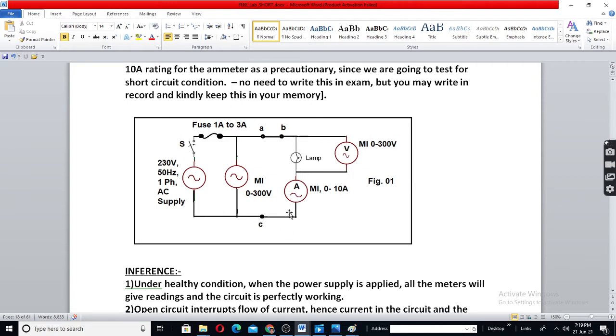Ammeter is in series with both supply and load. Voltmeter is across supply as well as across lamp. There is switch and also a fuse. Better put only 1 ampere fuse.